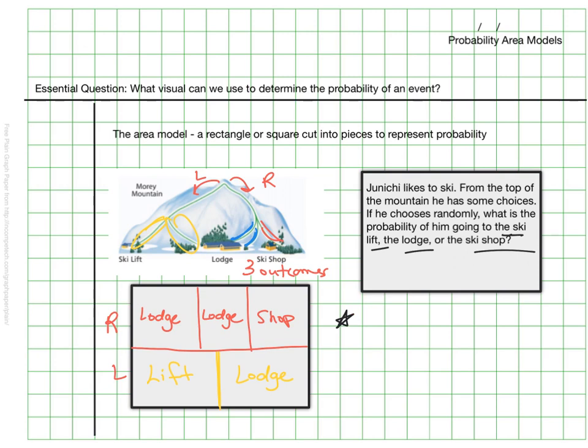So this visual now tells us the probability of all's options, however these spaces are not the same size so we can't compare them yet. When I look at these I see that I have thirds here and I see that I have halves here, and I know that thirds and halves can both be broken down into sixths, so we're going to cut that into sixths everywhere. This would get cut up again, this would get cut up again, and this would get cut up again. Additionally our lift would be cut into sections with our lodge so that we have sixths everywhere.